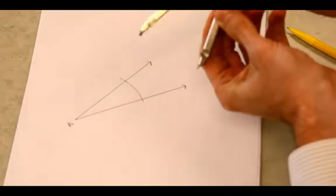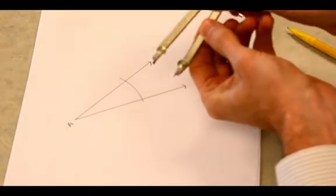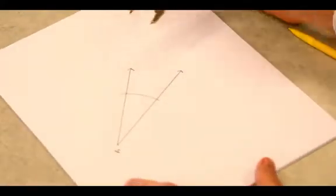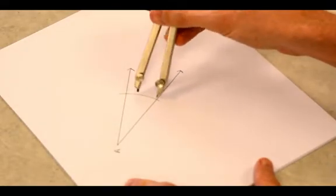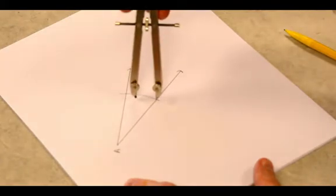Then I'm going to close my compass up and it needs to be a smaller distance than the distance between the rays. So something like that. But it has to be more than halfway across.